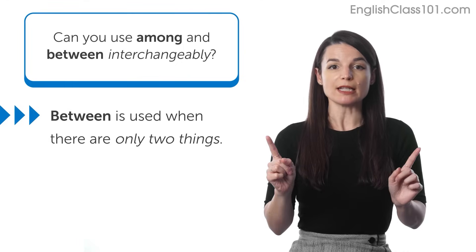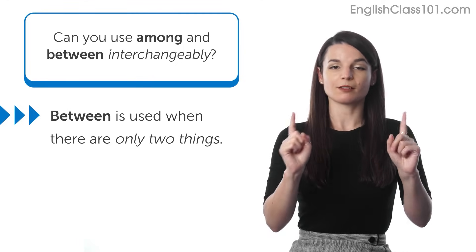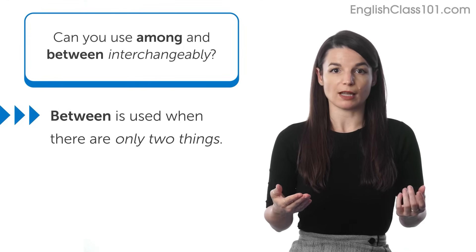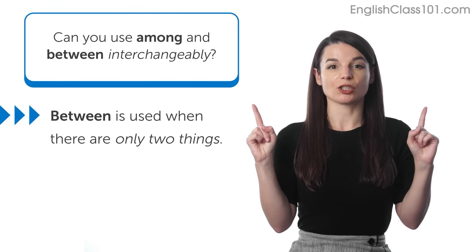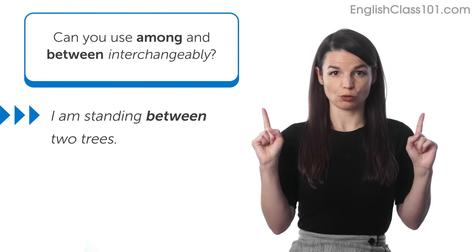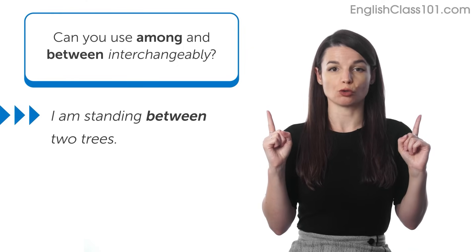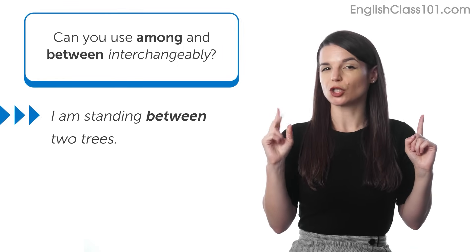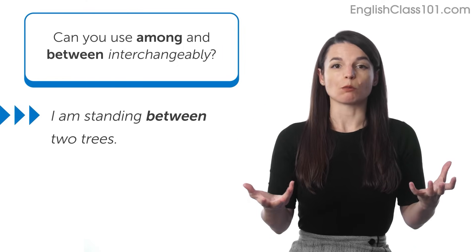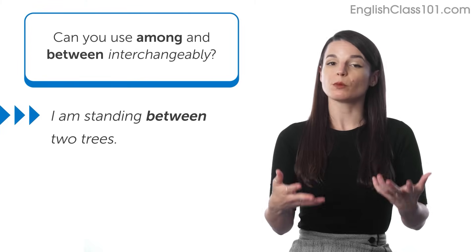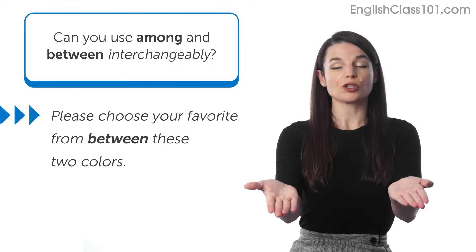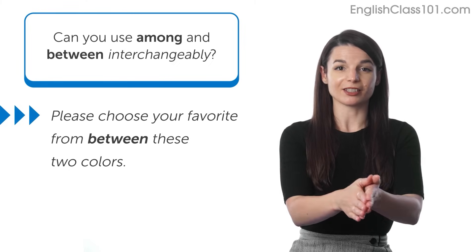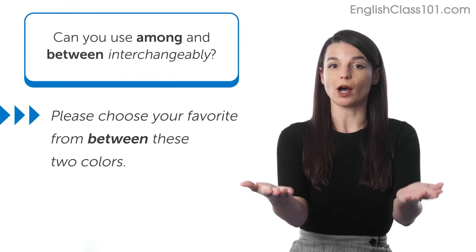On the other hand, between is used when there are just two things. So again, if you are in the forest, for example, and you decide to stand between two trees, you would not use among to describe that. You would say, I am between two trees. I'm standing between two trees. You wouldn't say I'm among two things. We use between when we have two choices. We would do the same thing when we're choosing our favorite color. For example, if you said, please choose your favorite from between these two colors, it sounds like there are only two options.